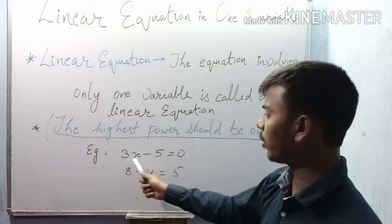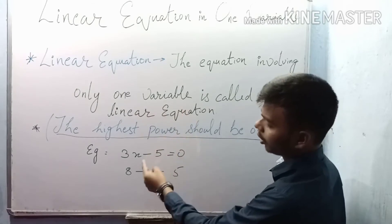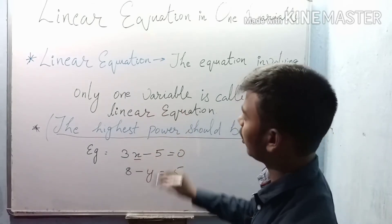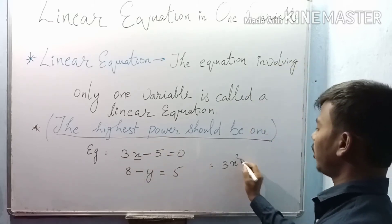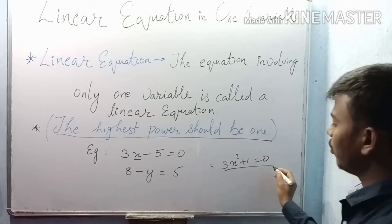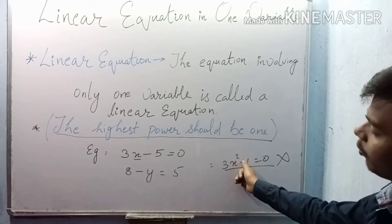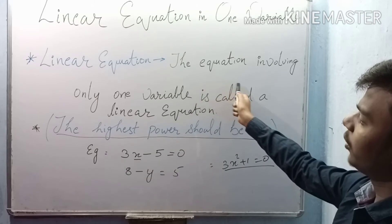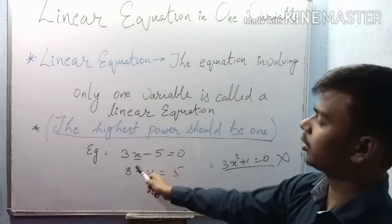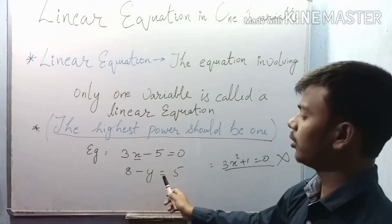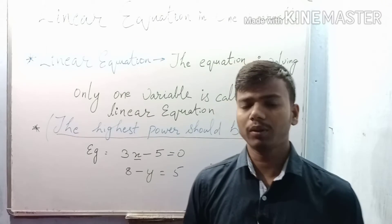For example, 3x minus 5 equals 0 is a linear equation — there is only one variable and the highest power is 1. However, 3x squared plus 1 equals 0 is not a linear equation because the power of the variable is 2, not 1. Another example of a linear equation is 8 divided by minus y equals 0.